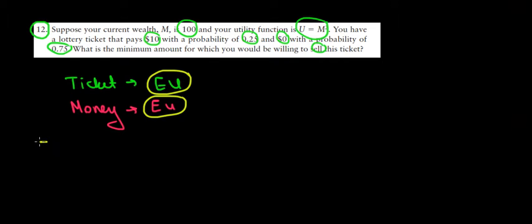So what would be the expected utility from the ticket? The expected utility from the ticket, from the gamble. Well that would be with a 0.25, with a 25% probability, we would win 10 extra dollars. So our utility would increase and we know that the utility depends on our dollars, on our money.